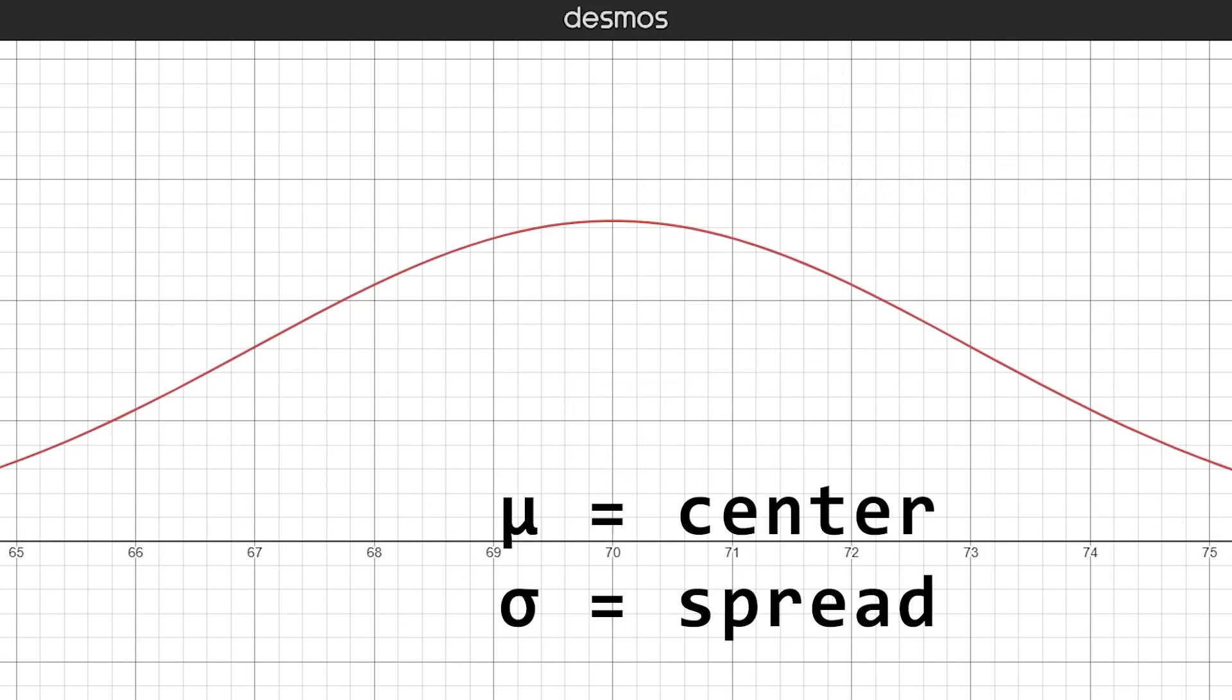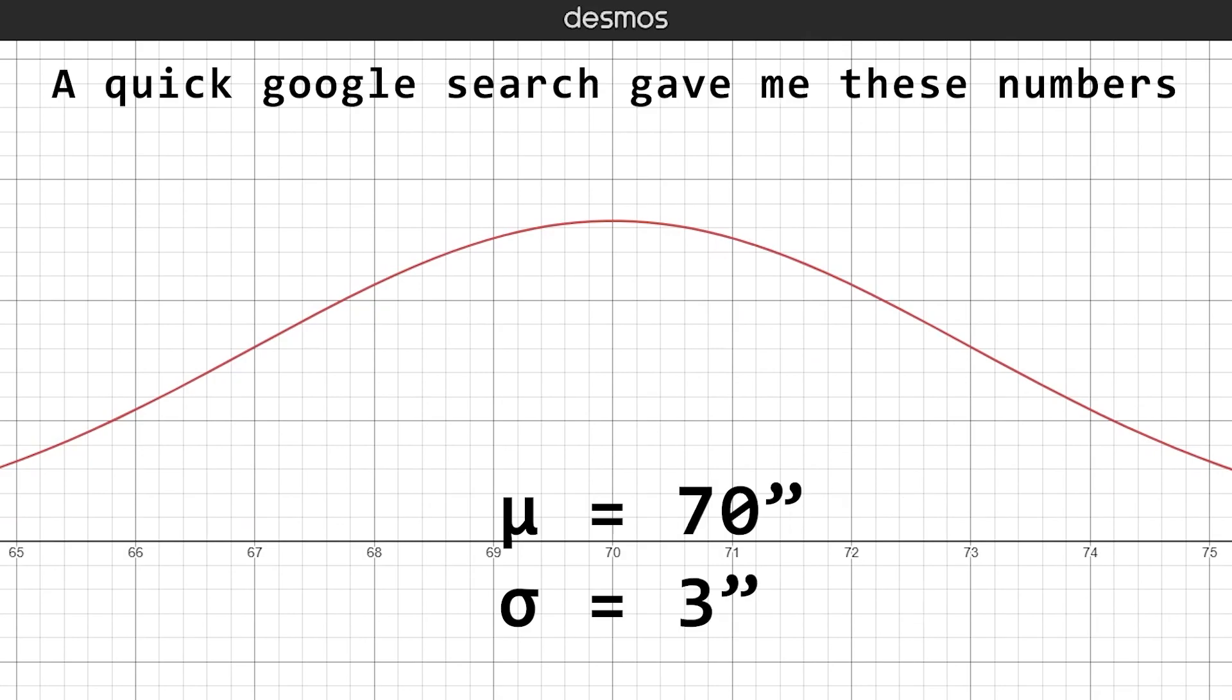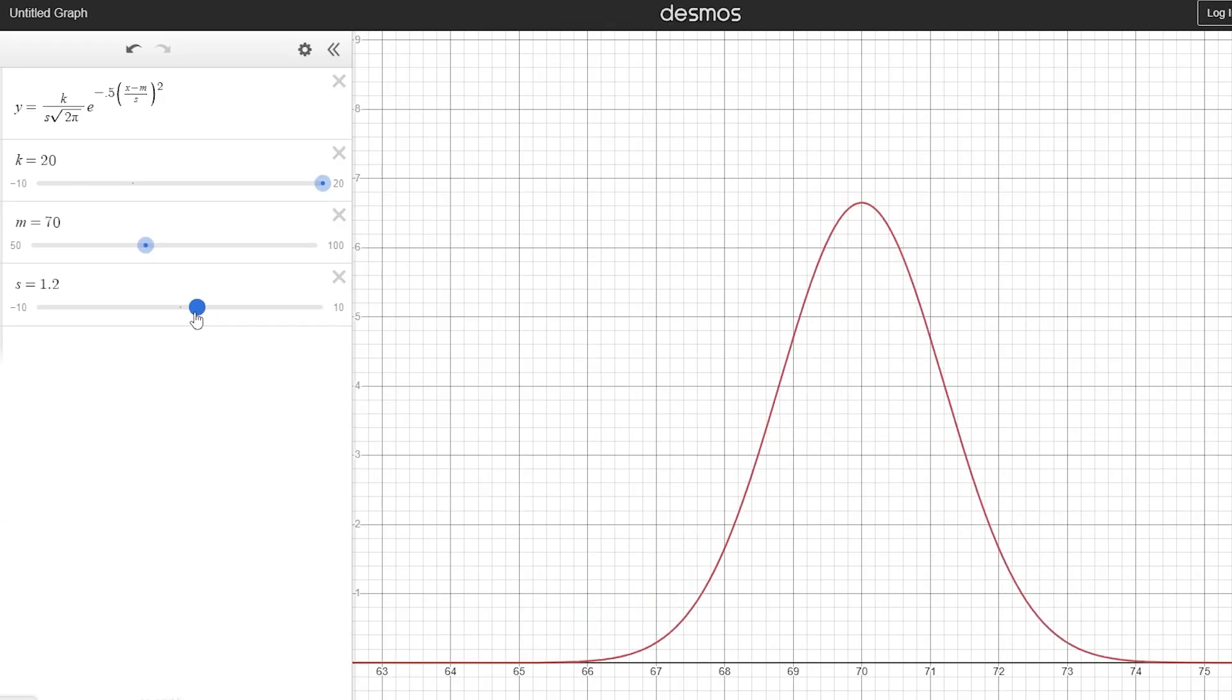The mean tells us where we are centered, and our standard deviation tells us how close our data is to the center. In our height example, we have a standard deviation of 3 inches. If this standard deviation gets smaller, the data will be pulled towards the mean, and if it gets bigger, it will be more spread out.